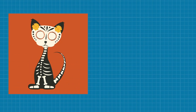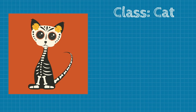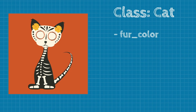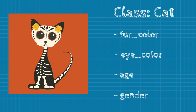Let's talk about class first. A class is a blueprint or a template for creating objects. Consider the class cat. Cats often have four legs, two eyes, and optional fur and tail. Let's define some common attributes of cats. Cats may vary in fur colors, eye colors, genders, and age. Those are called instance variables of the class cat, because each cat instance will have those attributes.